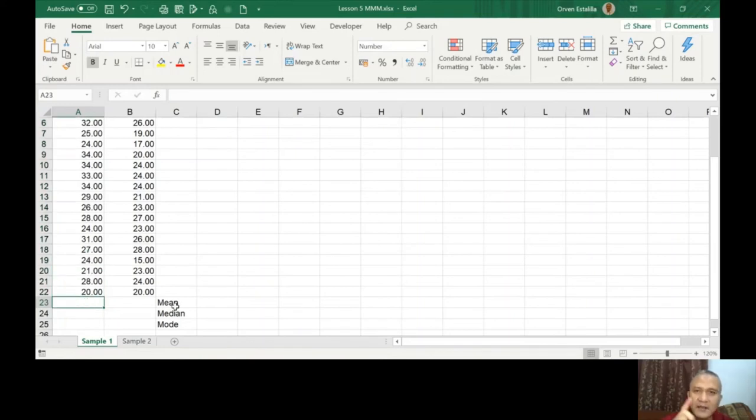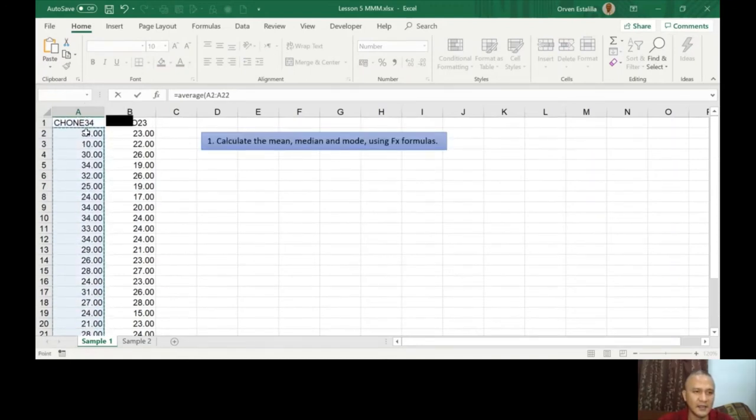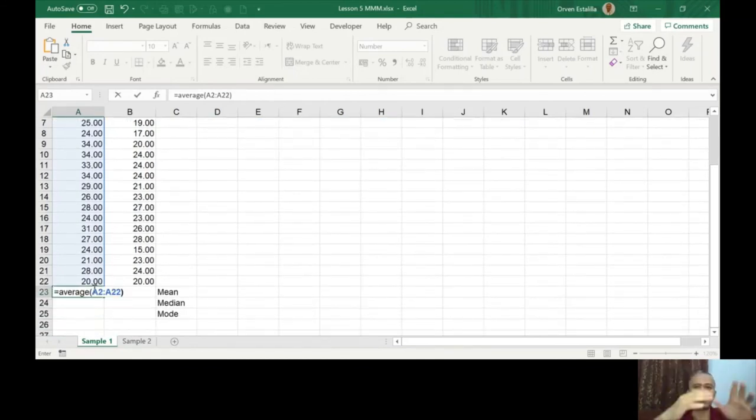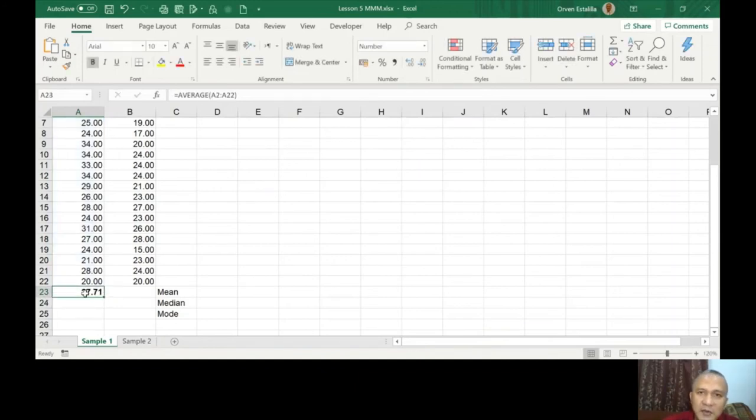Of course, mean, we said in our PowerPoint, mean is just the average. We don't have a function mean in Excel, but we have the average. So equals average, and then just highlight this. If you don't want to highlight and you already know the coverage from A2 until A22, just type it A2 colon A22, so it should be range and then close parenthesis. So the answer is 27.71.